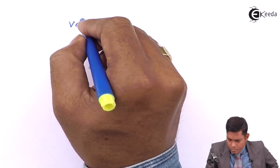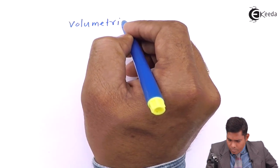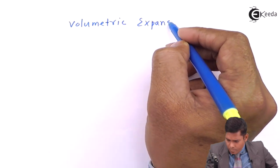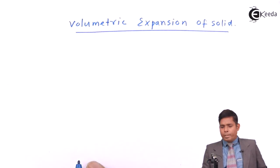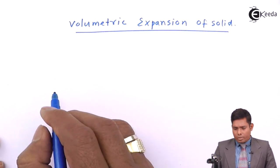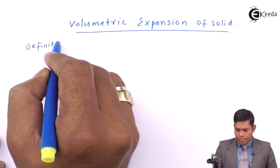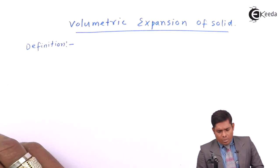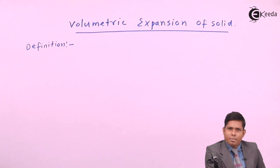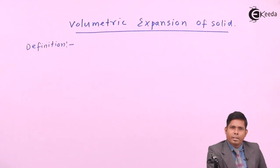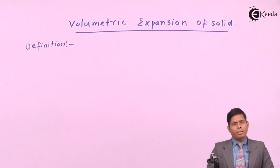Today we will discuss the volumetric expansion, or volume expansion, of a solid when it is heated. We take a solid — a metal slab — and when we heat it, its length, breadth, and height all three dimensions will change, so it will expand in a 3D manner.